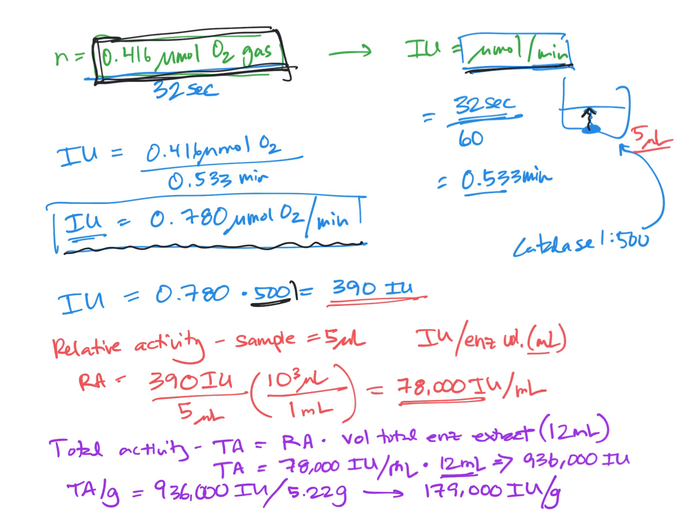And because we had diluted that sample, so this is the activity of the diluted sample, if we wanted to think about what the activity would be in the undiluted sample, this would be 390 IU per minute. Okay, so the relative activity is thinking about how much we actually sampled. That is only 5 microliters of the entire sample. And we can use that to sort of extrapolate up to what would be present in our entire tube.